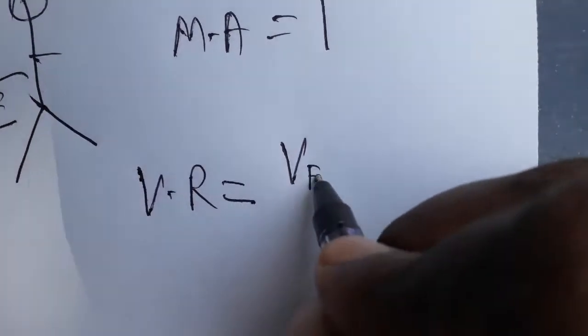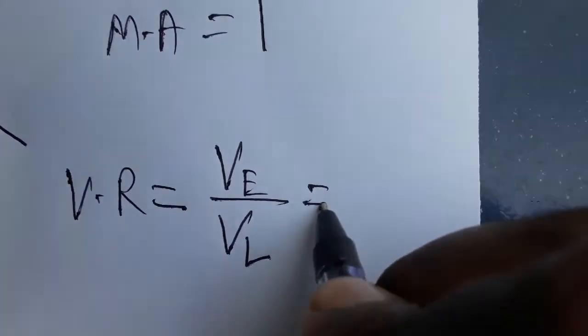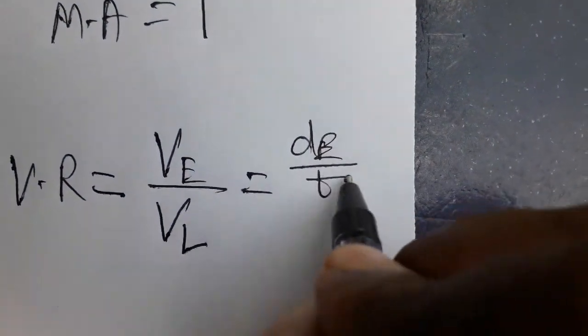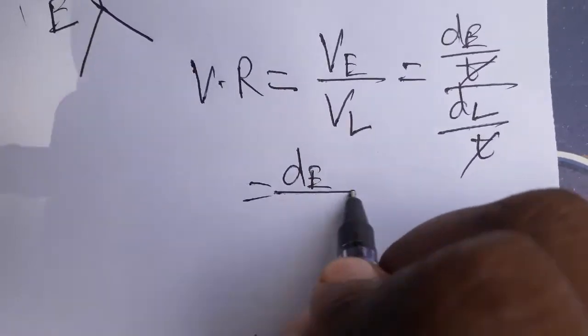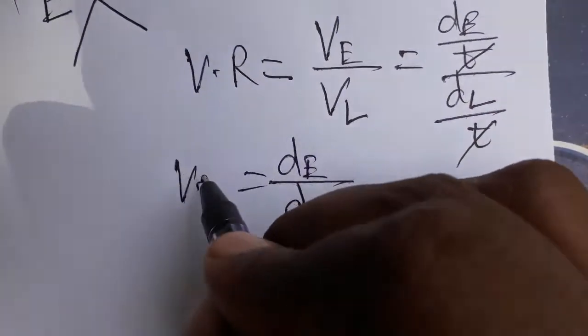Velocity ratio is velocity of effort by velocity of the load. That is displacement of effort by time, displacement of load by time. Time gets canceled, so displacement of effort by displacement of load is called velocity ratio.